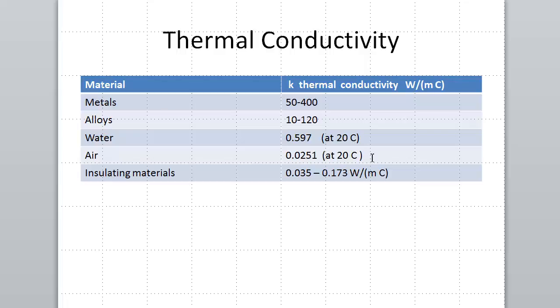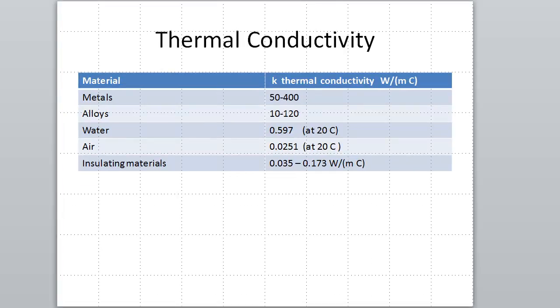For most solid materials, for temperature ranges that are important in food processing, the thermal conductivity value does not really change much. But for fluids, it does change appreciably. Therefore, we will use tables for different temperatures to obtain thermal conductivity of air and water.